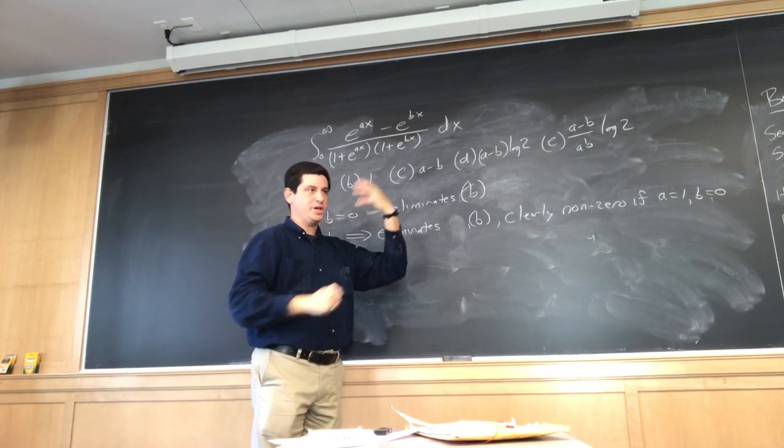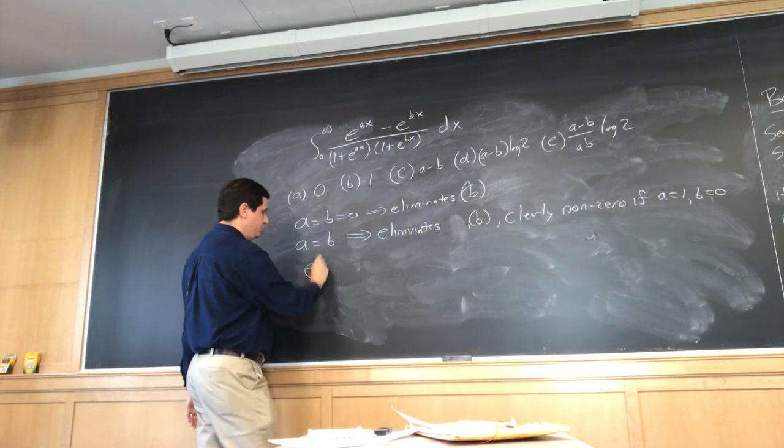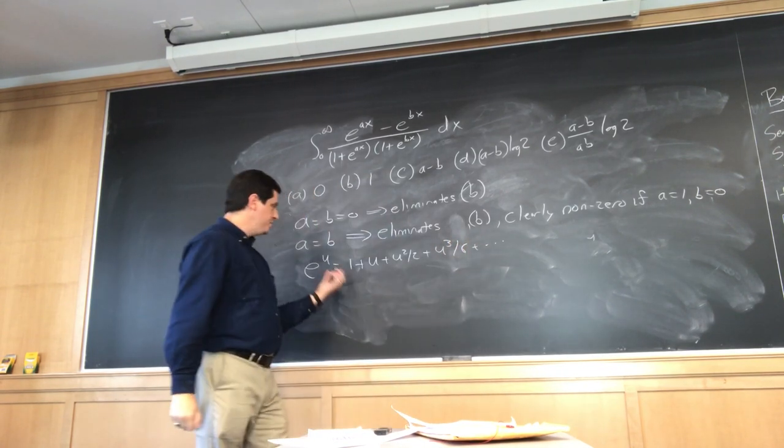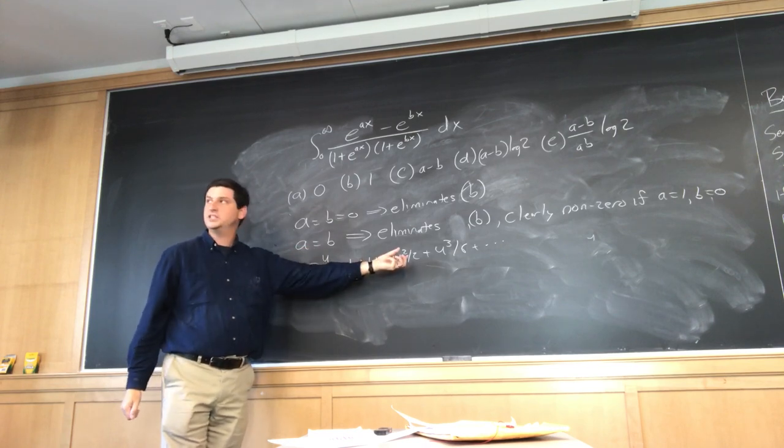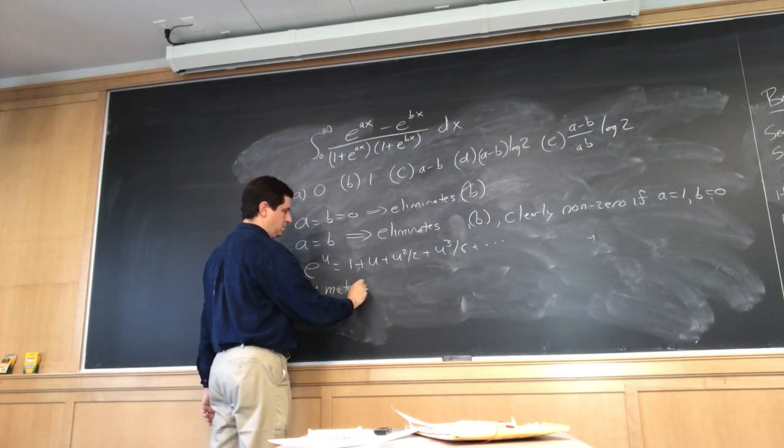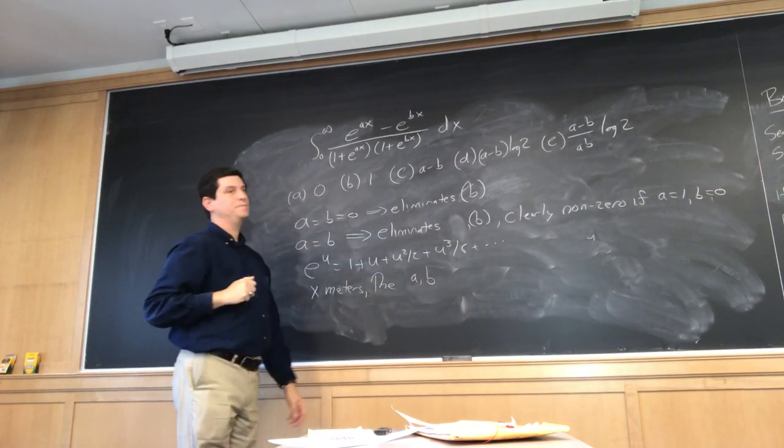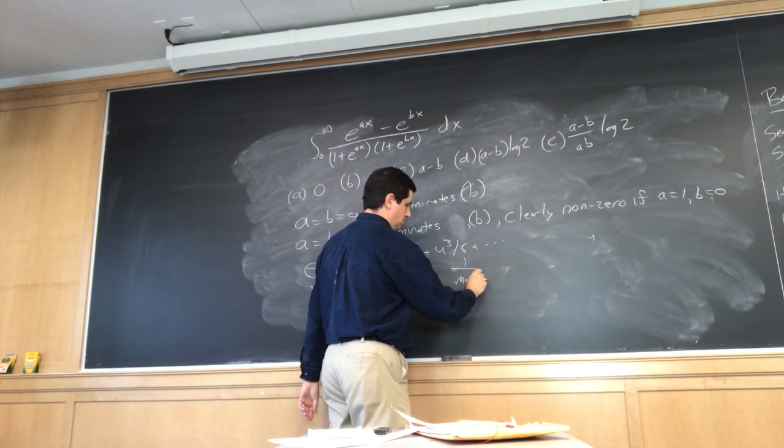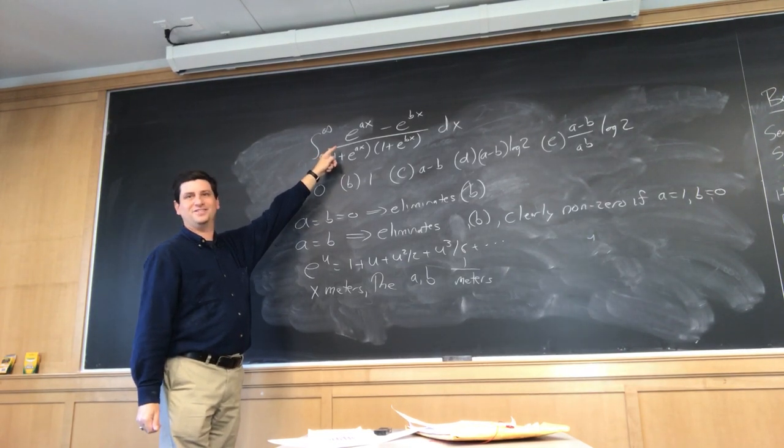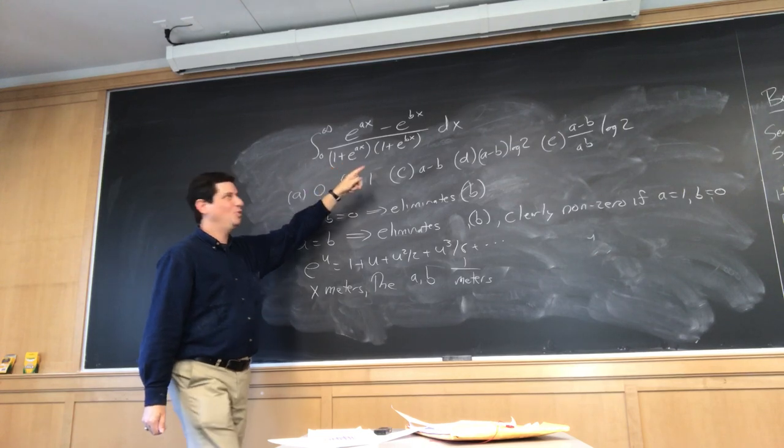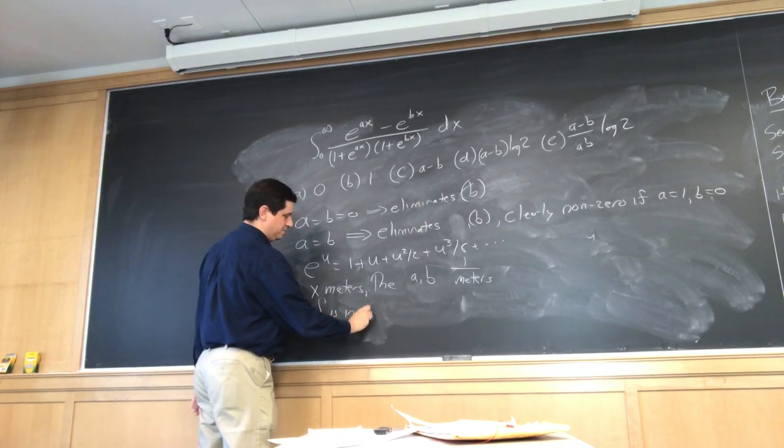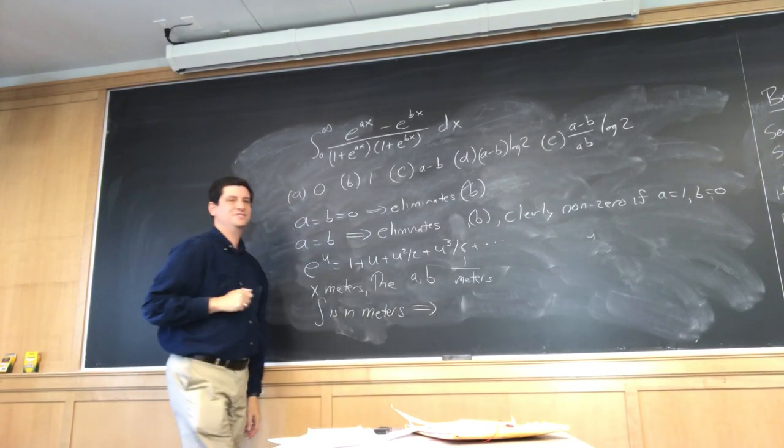When you exponentiate something, it's unitless. E to the u is 1 plus u plus u squared over 2 plus u cubed over 6 and so on. For this to make any sense, you can't have any units because otherwise these things that you're adding will be different quantities. So if x is in meters, then what can you tell me about the units of a and b? 1 over meters. So when you look at this integration, what can you tell me about the units of the numerator? No units. What about the units of the denominator? What about the dx? So the whole thing has to be in meters. Integral is in meters. Therefore, what's the answer? The only answer is E.